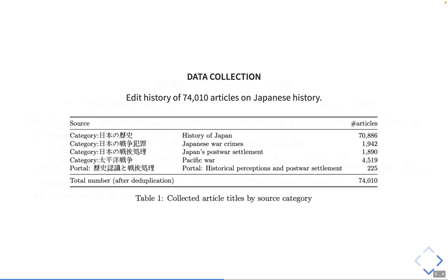We collected about 74,000 articles on Japanese history. We used a general category, history of Japan, and three war-related categories: Japanese war crimes, Japan's postwar settlement, and Pacific war. We also used the portal page introducing articles related to the war and the perception towards events. Because these articles are curated by a group of editors, we expect that they are at the center of the topic, and therefore potentially more contentious.